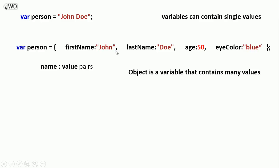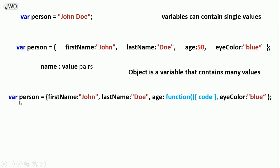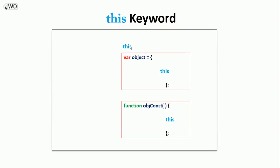We say: var object = { name: value, name: value, name: value } — the last one has no comma — then we close the brackets and add a semicolon. The name here cannot only have a value; it can have a function. For example, for a person object, first name has a value, last name has a value, color has a value, but age has a function. First name, last name, and color are called properties, and age here is a method. Remember: an object has properties and methods.